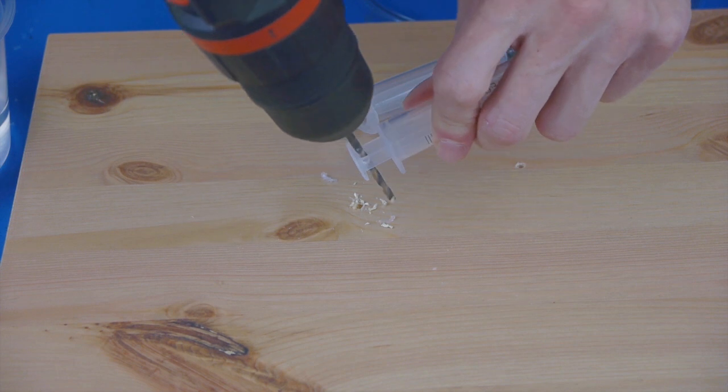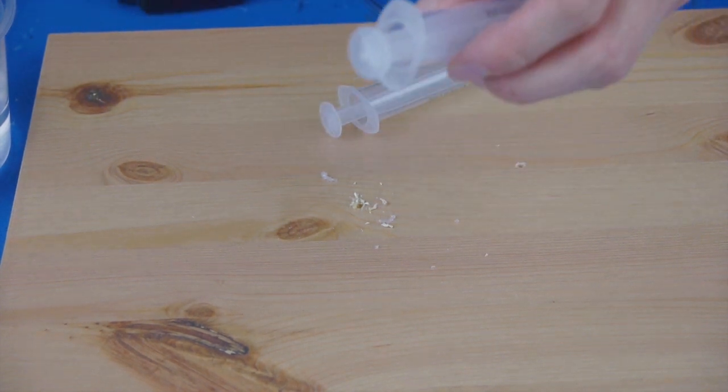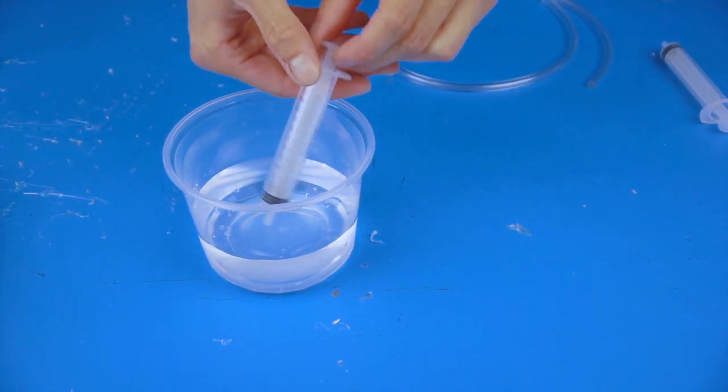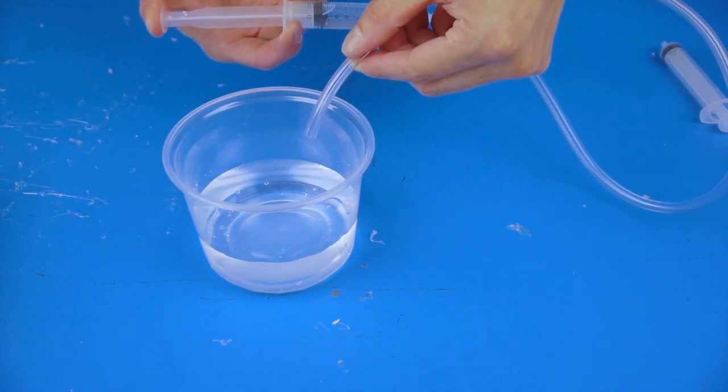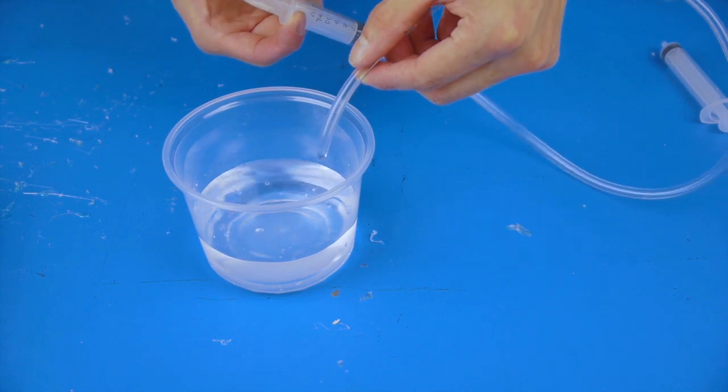Time to make the hydraulic systems. Begin by drilling an eighth-inch hole through the syringe plunger. Fill up one syringe with water, attach the tubing, and then push water through the tubing to remove all of the air.